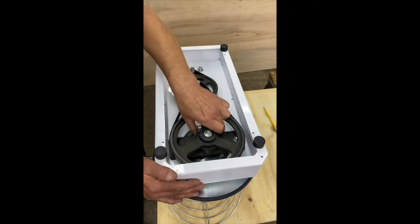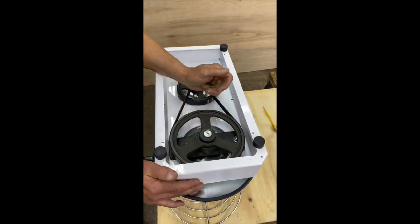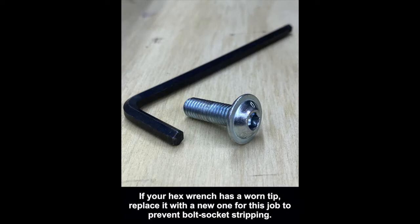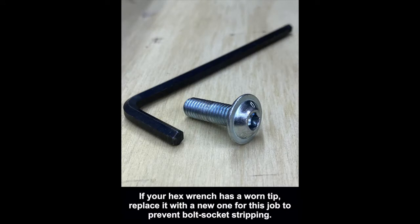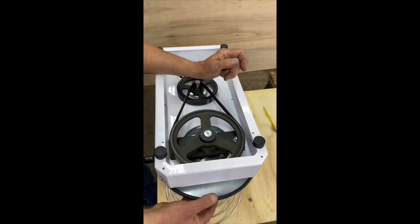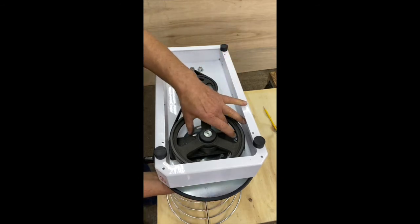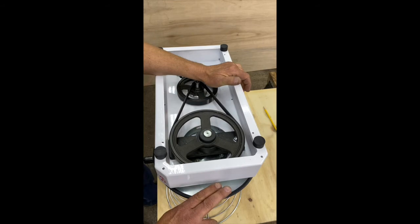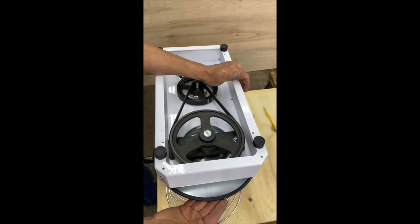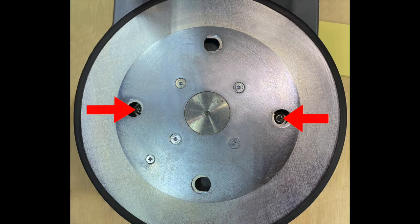The bolts holding this whole assembly tight are socket head bolts with a 5-millimeter hex socket recess in the center of their heads. Our access to these is going to be from what's underneath now. In this plate right here, which is the bowl mounting plate, there are four holes.